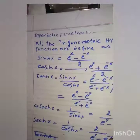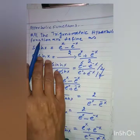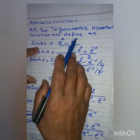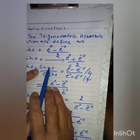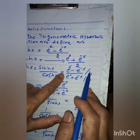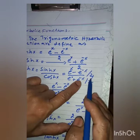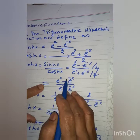Now the hyperbolic functions. All the trigonometric functions are defined as hyperbolic trigonometric functions. Sinh x equals e to the power x minus e to the power minus x dividing by 2. Similarly, cosh x is equal to e to the power x plus e to the power minus x dividing by 2. And tanh x is equal to sinh x dividing by cosh x, which simplifies to e to the power x minus e to the power minus x dividing by e to the power x plus e to the power minus x.